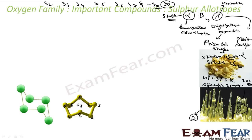Let's look at beta sulfur. The melting point is slightly higher at 393 Kelvin, and the specific gravity is slightly less at 1.9. It is light yellow in color and also soluble in CS2.